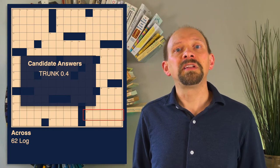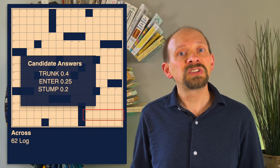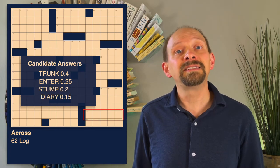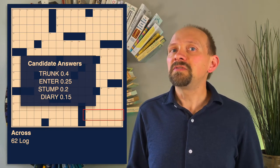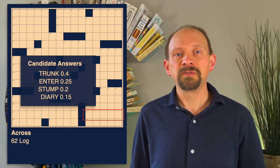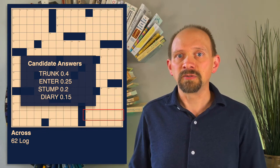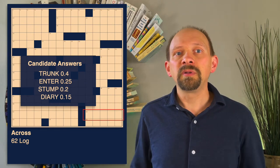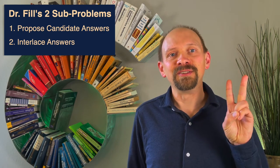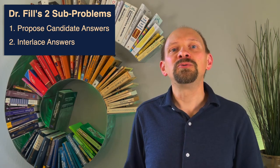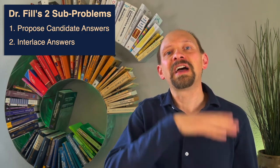Trunk, with a probability of 0.4. Enter, with probability 0.25. Stump, at 0.2 probability, and diary, with a probability of 0.15. Each of these five-letter words is a plausible fill for 62 across, and while the AI believes some of the candidates are more likely than others, if we add up their probabilities, we get a value of 1. The second sub-problem Dr. Phil must solve is how to interlace the possible fills for each separate clue into a full solution to the entire puzzle.